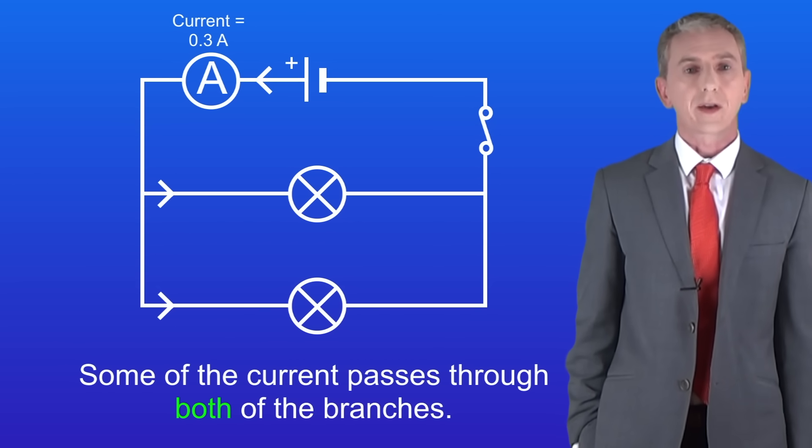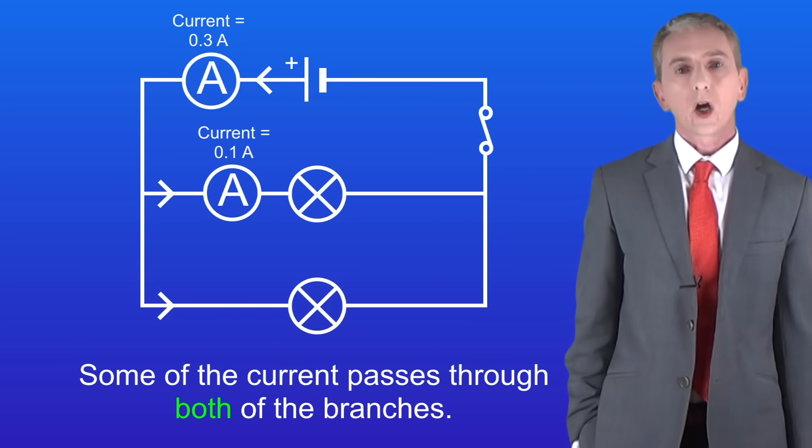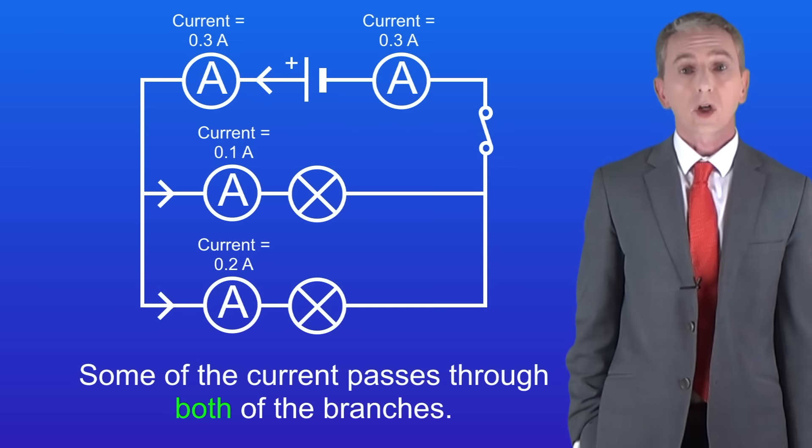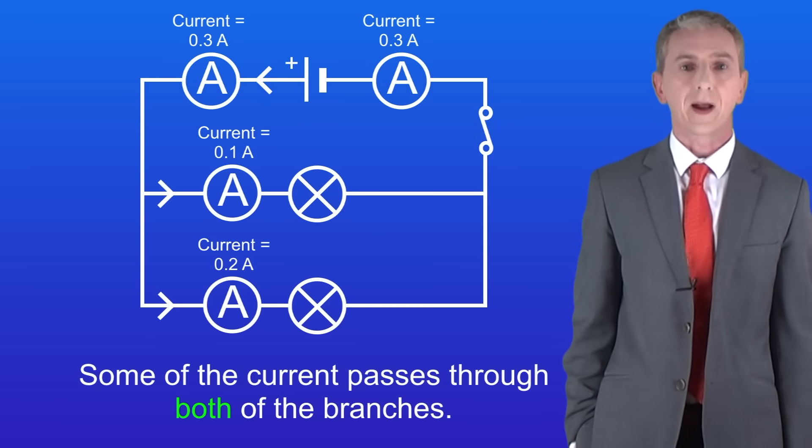So let's measure the current in the two branches. In the upper branch we've got a current of 0.1 amperes and in the lower branch we've got a current of 0.2 amperes. If we measure the current going back to the cell again we can see that this is now 0.3 amperes.